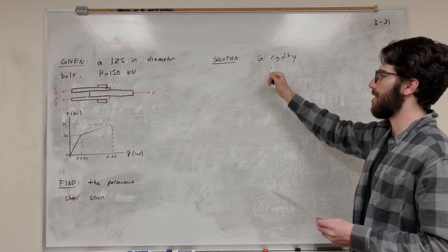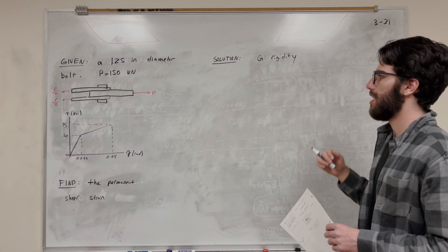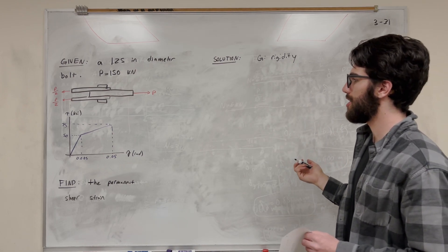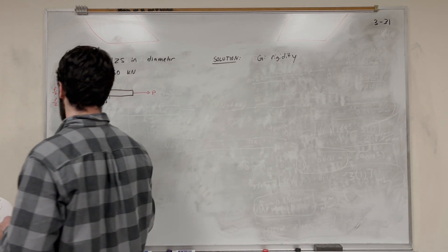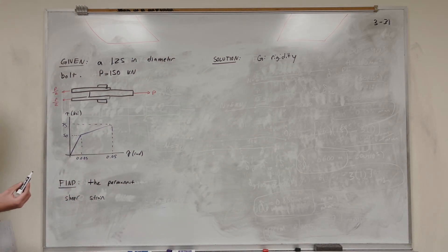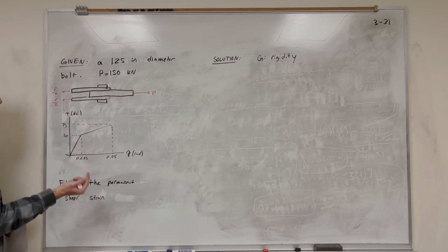For that, we're going to need our G, which is our modulus of rigidity. So let's calculate that. If you look at your shear stress-strain diagram, it's the slope of this line here in the elastic phase. So in this line here, if you let go, it's going to go back to normal. So we've got to find the slope of that.